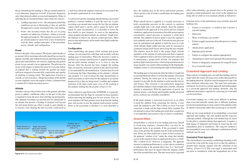Power is the pilot's first concern. The instant the pilot decides to go around, full or maximum allowable takeoff power must be applied smoothly and without hesitation and held until flying speed and controllability are restored. Applying only partial power in a go-around is never appropriate. The pilot must be aware of the degree of inertia that must be overcome before an airplane that is settling toward the ground can regain sufficient airspeed to become fully controllable and capable of climbing or turning safely. The application of power is smooth as well as positive. Abrupt movements of the throttle in some airplanes causes the engine to falter. Carburetor heat is turned off to obtain maximum power.